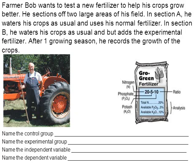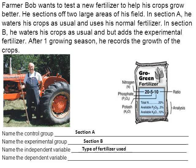The control group is section A — the normal section of crops. The experimental group is section B, where something different has been done. The independent variable is what's different between section A and section B — the type of fertilizer the farmer uses. He still waters the crops as usual, but uses a different fertilizer. The dependent variable is how he measures whether one fertilizer is better: he's measuring the growth of the crops.